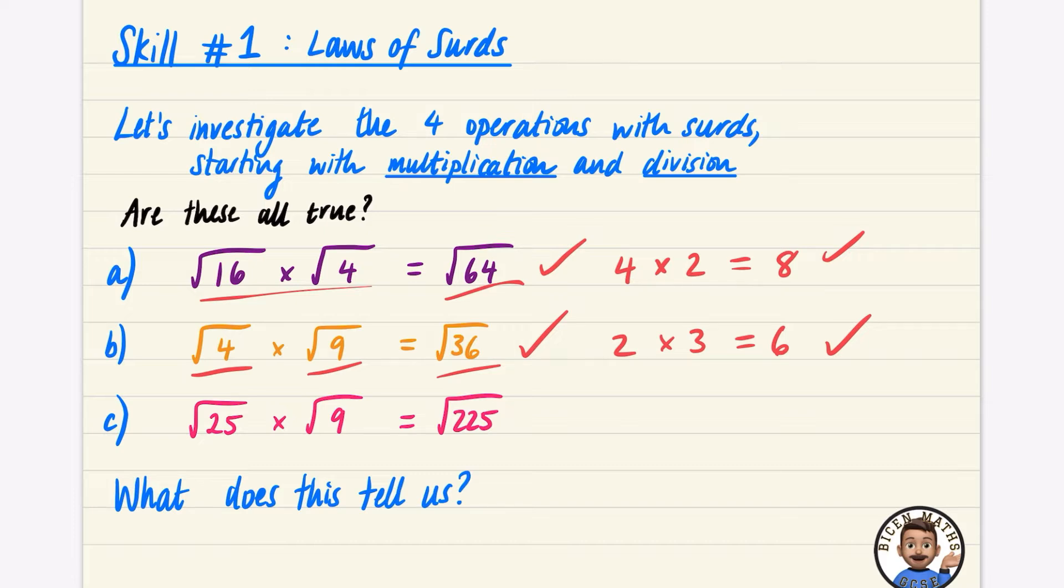Look what's happening here. If you do 16 times 4, you get 64. If you do 4 times 9, you get 36. And we can check it with this last one.